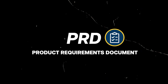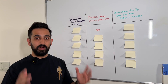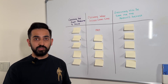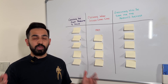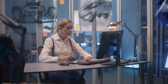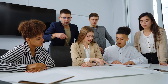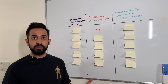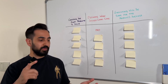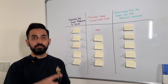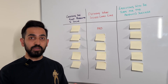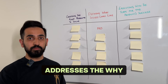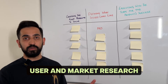First we have PRD, or product requirements document. This is a document that defines the requirements and specifications for how a product should be built. It's written by the product manager in collaboration with the engineers, designers, and other folks on their cross-functional team. It's an important tool for communicating with the development team, stakeholders, and other folks who will be working on the product. A great PRD addresses the why behind the product as well as user and market research.